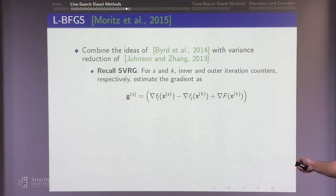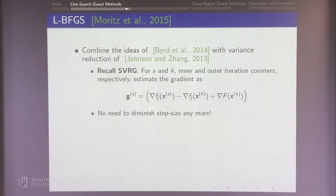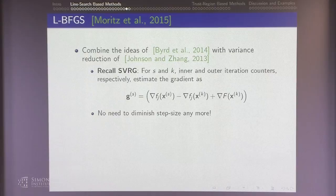The good thing about variance reduction is that you don't need a diminishing step size anymore, because the variance goes down by itself as you approach the optimum. This correction lets you keep the step size fixed. Combining SVRG with the quasi-Newton update, this paper recovered the linear rate of gradient descent.